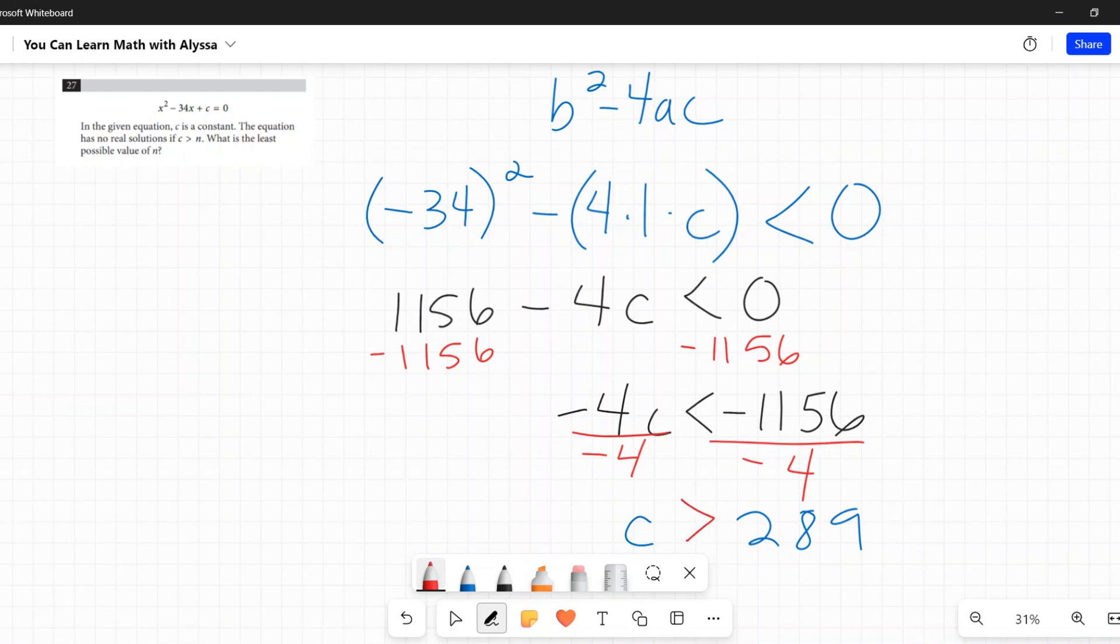Now what is the question exactly? The equation has no real solution if c is greater than n. Okay, so 289 is n. And then it says what is the least possible value of n - it's right there: 289. 289, that's my answer.